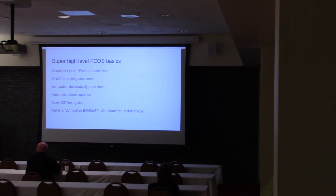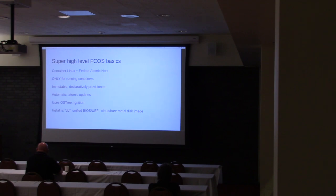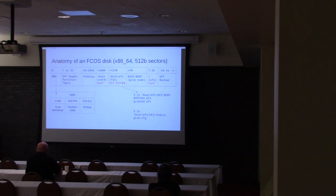Fedora CoreOS is set up so that your install is just a DD to disk, and then injection of a config into your boot partition. The advantage of this is it makes your bare metal case exactly like your cloud cases. On clouds, instead of injecting your configuration into boot, you'll grab it from the EC2 metadata endpoint. But in both cases, you're starting with the same image and the boot process is the same.